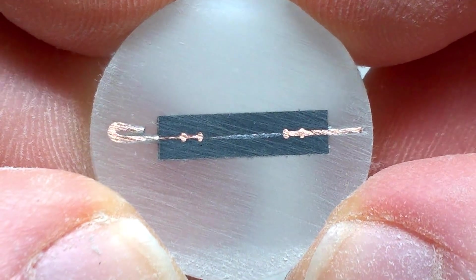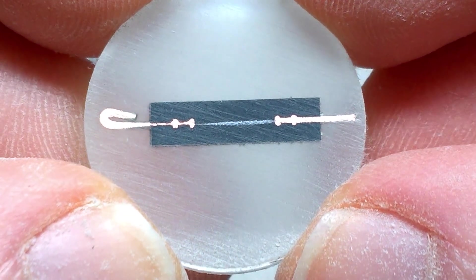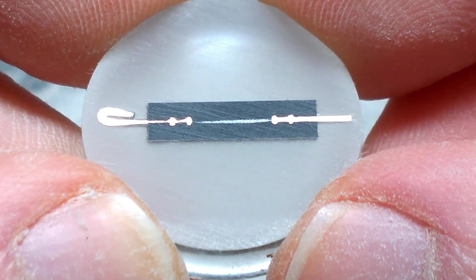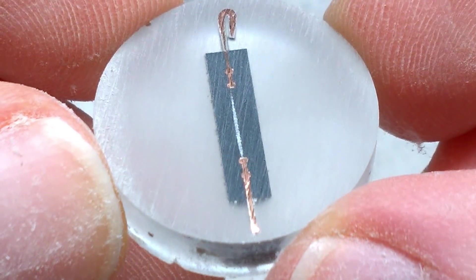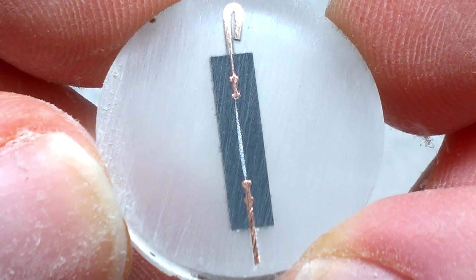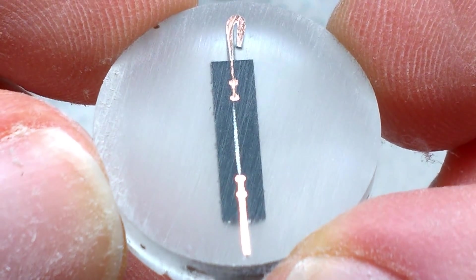Sanding it down even further we can start to make out some of the silicon die. I can't really see exactly what's going on here yet so I'll sand it down all the way to halfway through now.